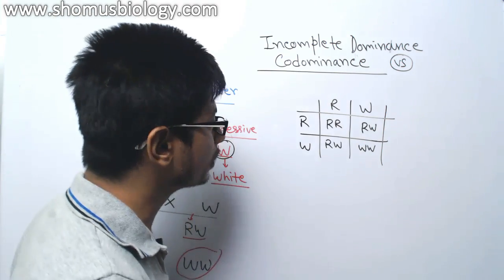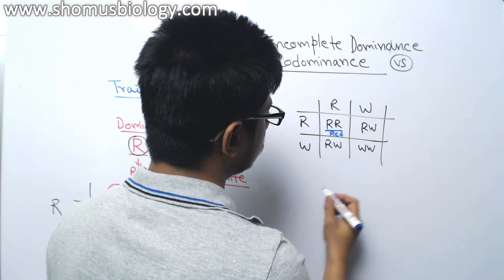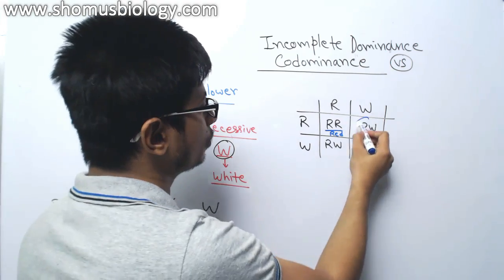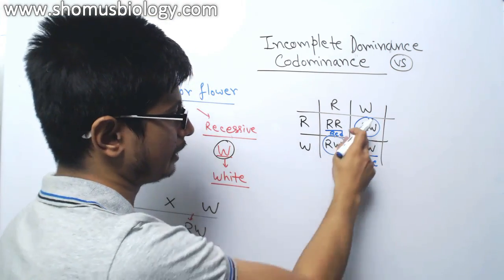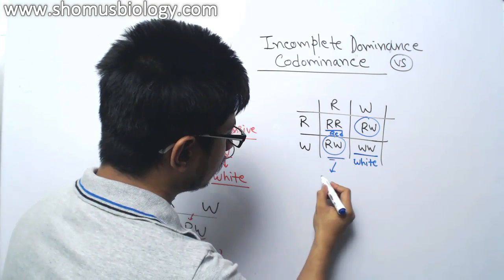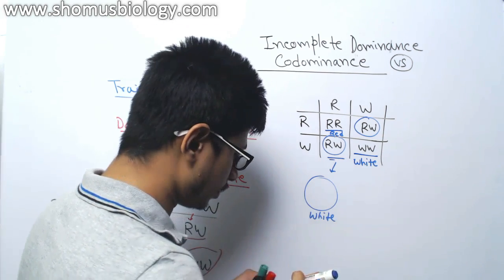But now look at the phenotype. This is red, this is white, but these two which are heterozygous properties in nature, RW.